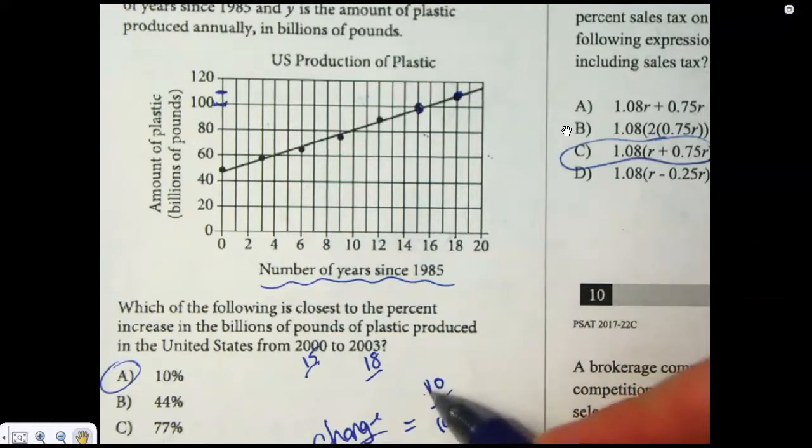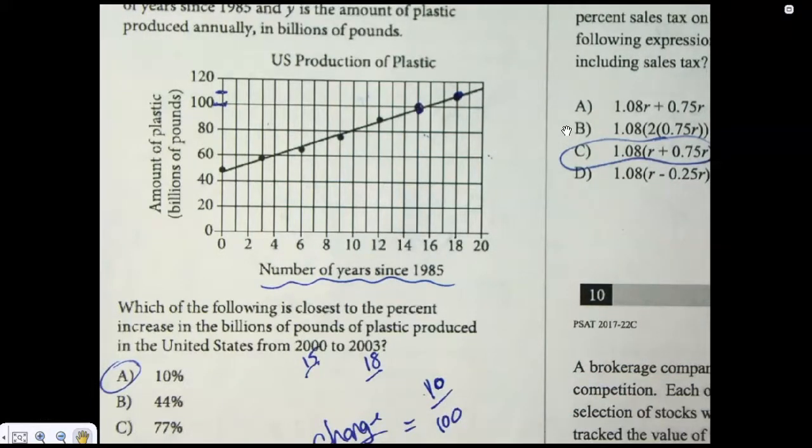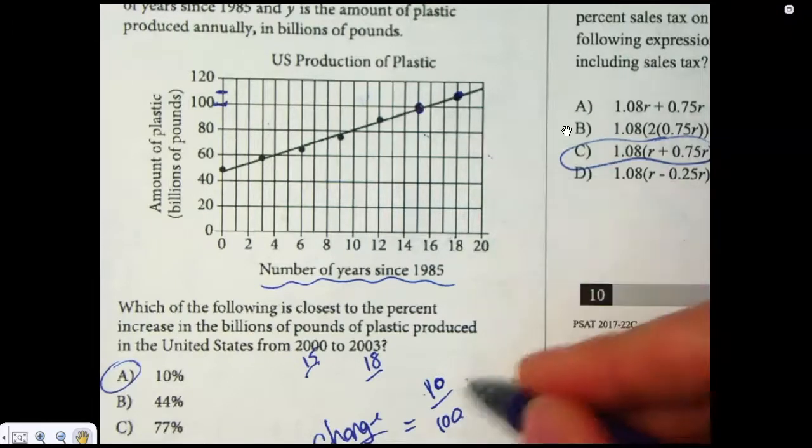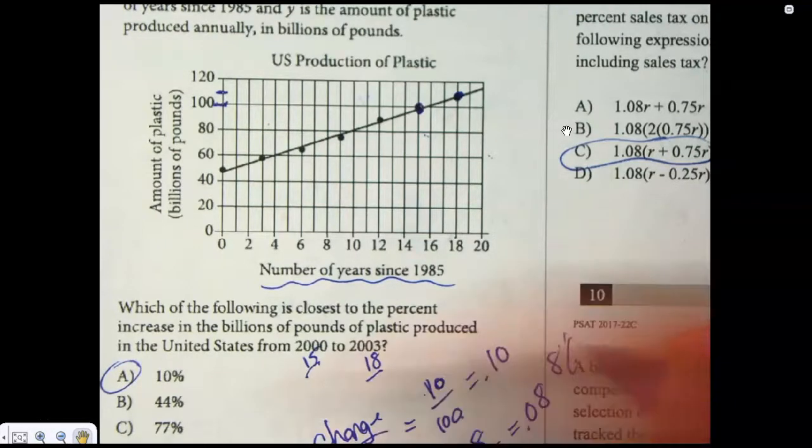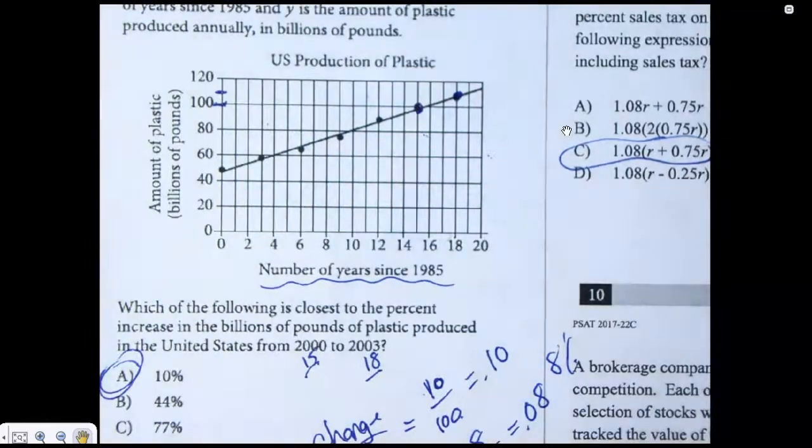but the change is 10, let's say. Maybe it looks like eight, but it's not going to matter when we get to the answer. The original amount is 100. If I divide that with those, I get 0.10. And if you thought it was a little less, you know, maybe you say it's 8 over 100, but that's 0.08, which is 8%. And then this is still your best answer.